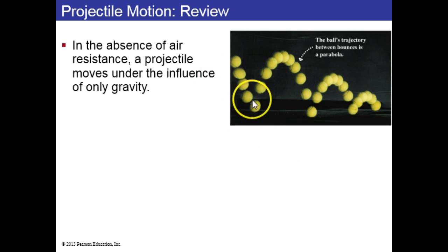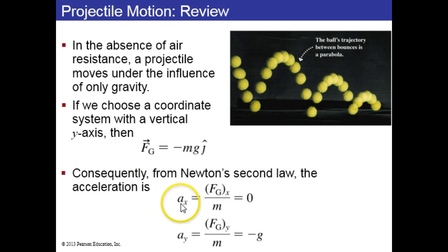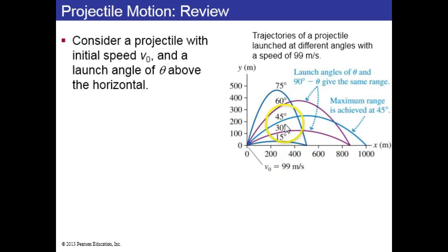Let's review a little bit of projectile motion from chapter 4. In the absence of air resistance, if we choose a system where the vertical axis is y, then the net force is in the negative y direction with magnitude mg. So the acceleration, A sub x, is equal to the net force in the x direction, which is zero, divided by mass. And the acceleration in the y direction is the net force in the y direction, which is negative mg, divided by the mass, giving you negative g. It turns out that the position, y versus x, is a parabola. So the path of a projectile is a parabola.